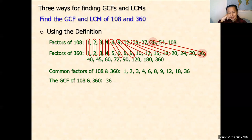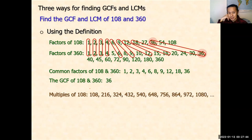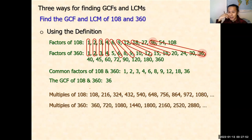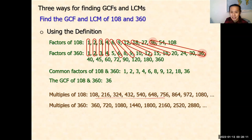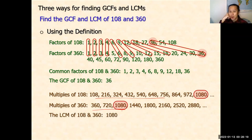Notice that the GCF is smaller than both 108 and 360, because factors are either equal to or smaller than the number. Now for multiples — multiples of 108 and multiples of 360 are each infinite in number, so there will be an infinite number of common multiples. But here we are finding the least or lowest common multiple, which is the first one that occurs. You'll notice that is 1080, so 1080 is the lowest common multiple, and it is greater than each of the two numbers.